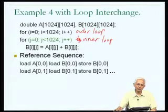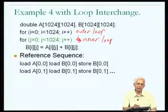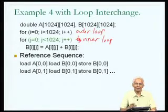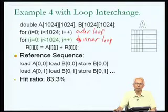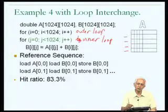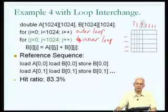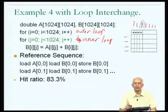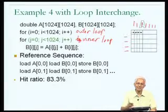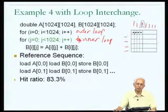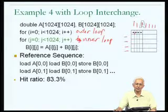We notice that the reference sequence is now: load A[0][0] first, then with I=0 and J=0, the second time I=0 and J=1, and so on. In other words, we are going through the matrices row by row. Viewing the two-dimensional matrix as rows and columns, this program now accesses A[0][0] followed by A[0][1] — the second element on the first row — going through the matrices row by row, which matches the storage order and benefits from spatial locality of reference.